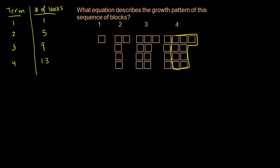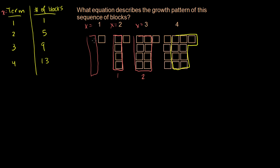One way to think about it: when x equals 1 (the term number), we have just that one block and no extra columns. When x equals 2, we added one column of four. When x equals 3, we have two columns of four. When x equals 4, we have three columns. So the number of columns is always one less than x.